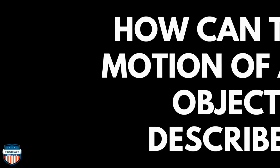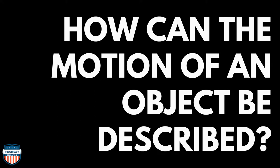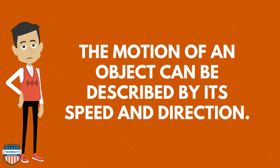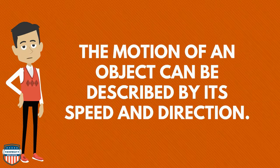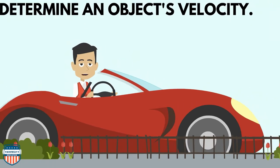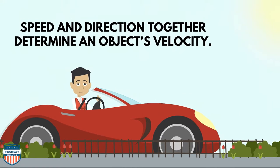How can the motion of an object be described? Well, the motion of an object can be described by its speed and direction. Speed and direction together determine an object's velocity.